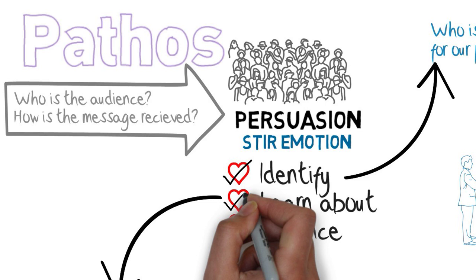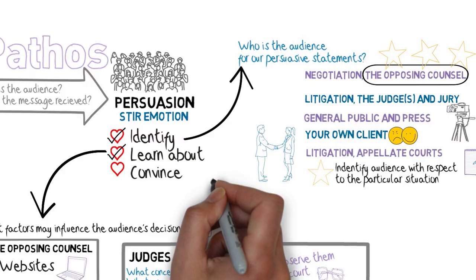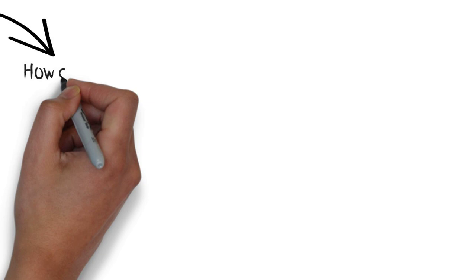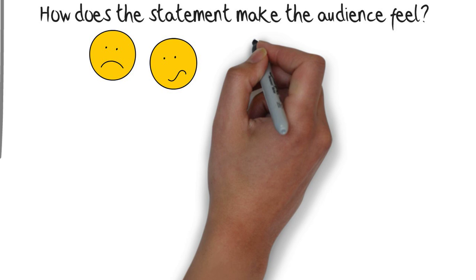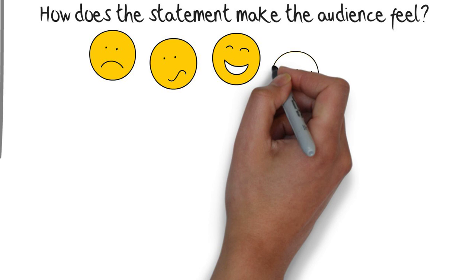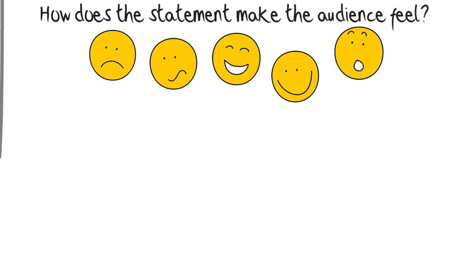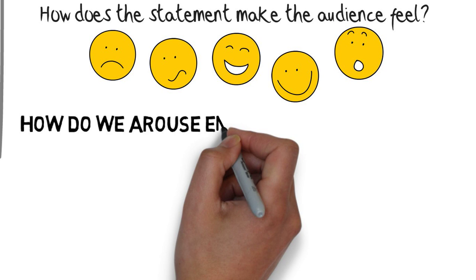Now that we've identified the audience and learned what we can about them, pathos is about how the audience reacts to what we say. So step three is about convincing the audience — how the statement makes the audience feel. We're trying to arouse an emotion. What emotions are relevant? Well, a sense of justice or injustice, empathy, sympathy, fear — these are all emotions that we want to potentially arouse in the audience.